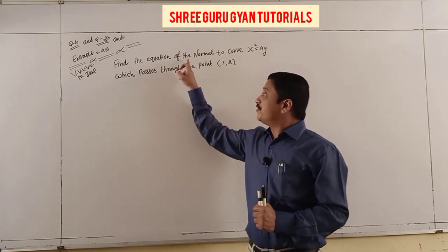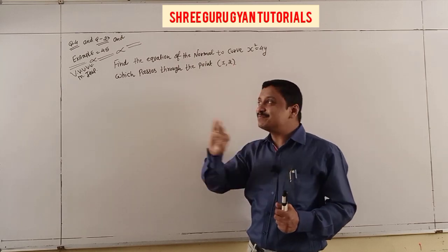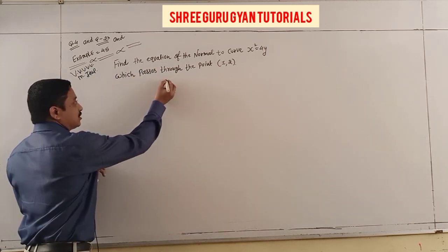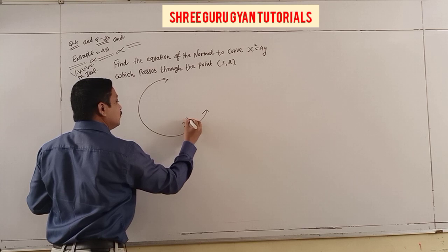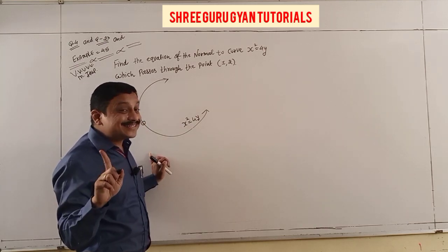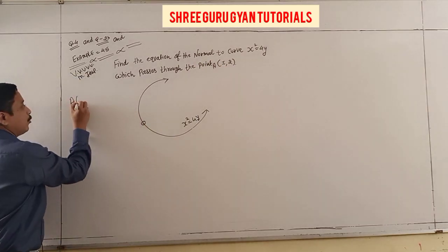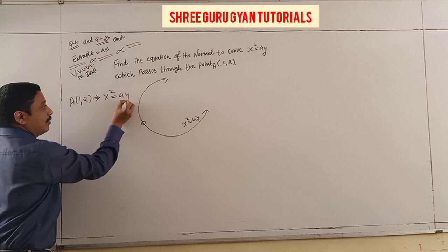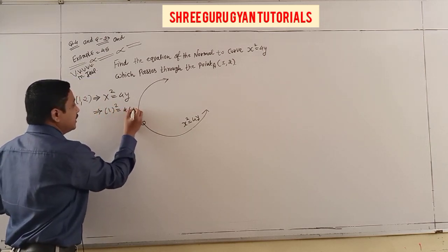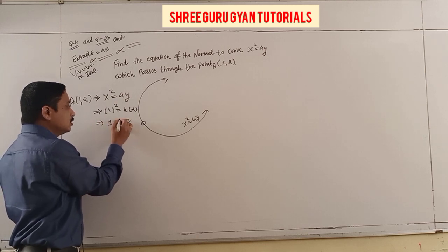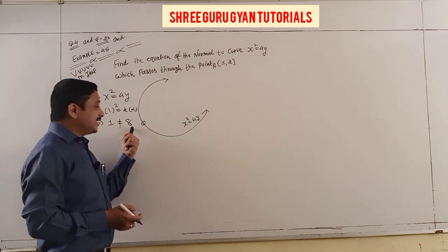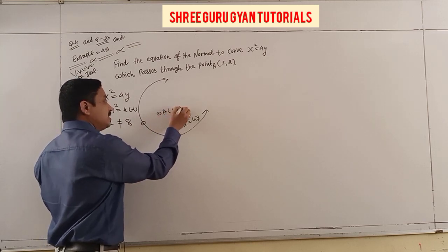The question is: find the equation of normal to the curve x² = 4y which passes through point (1, 2). Consider the given curve x² = 4y and the given point (1, 2). First check if (1, 2) lies on the curve: substituting gives 1 = 8, which is false. So the point does not lie on the curve — it lies inside the parabola.